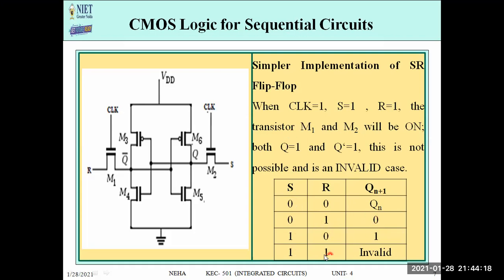Case 4: clock is 1 and both S=1 and R=1. If we give both S and R as 1, then both M1 and M2 will be on. Because both are on, Q and Q-bar will both be 1, which is not possible. So when both S and R are 1, that case is an invalid case. In this way, we have implemented the SR flip-flop exactly using only 6 transistors instead of 12.